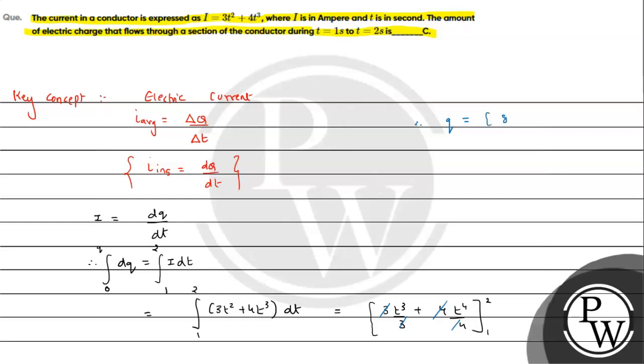So it will become 8 plus 16 minus 1 minus 1.